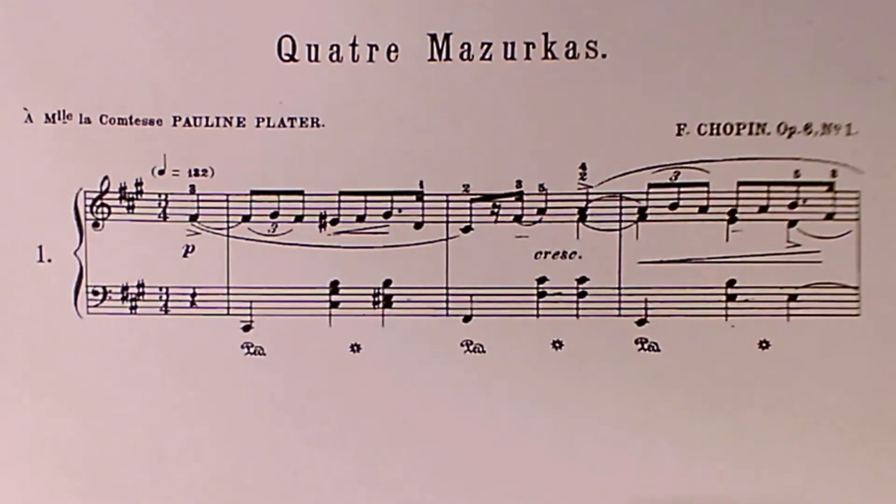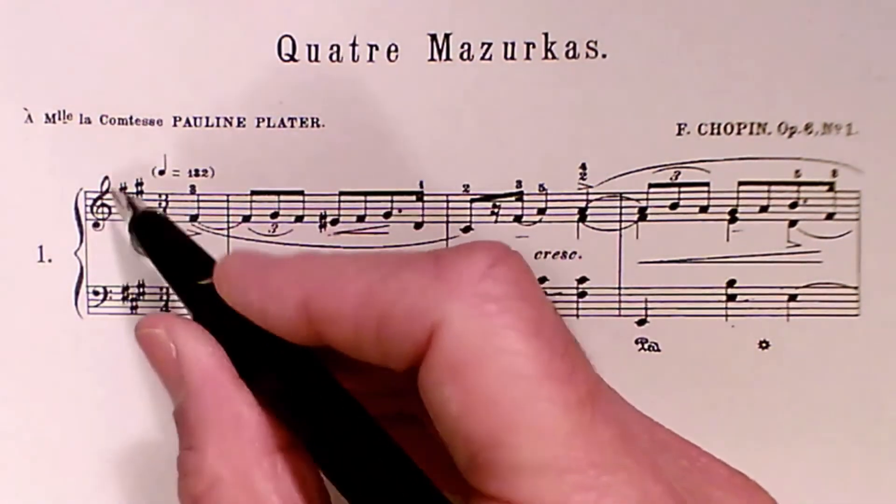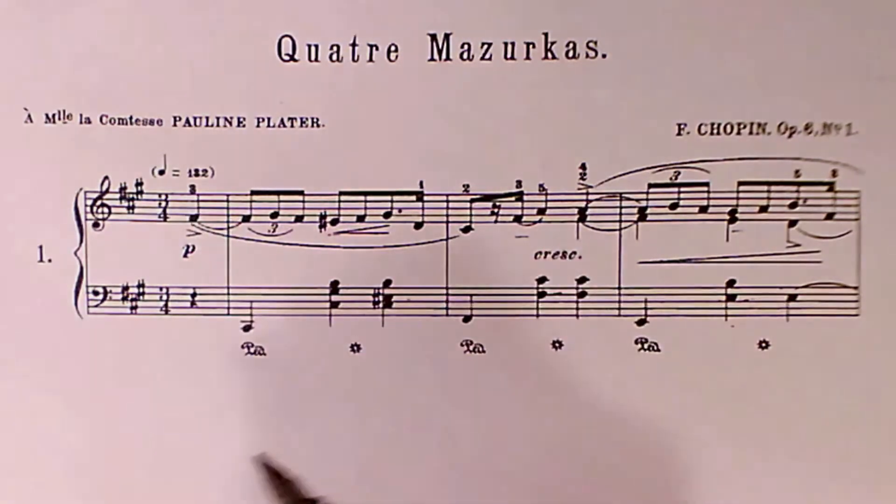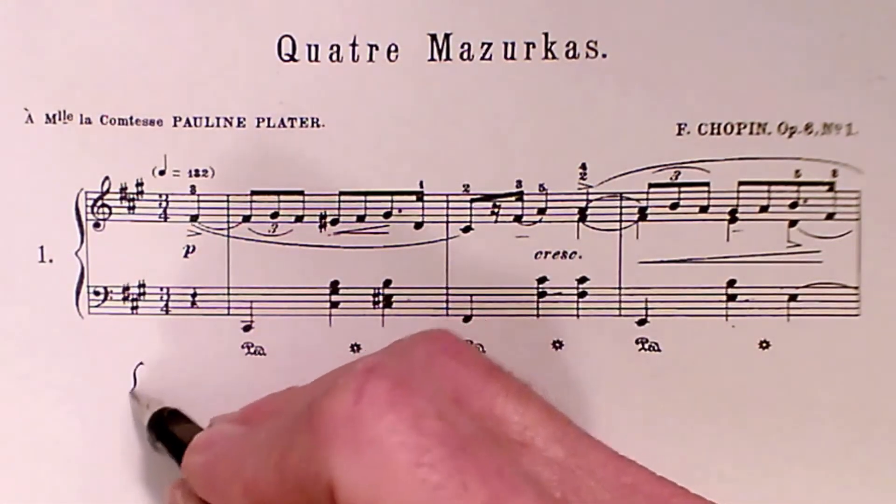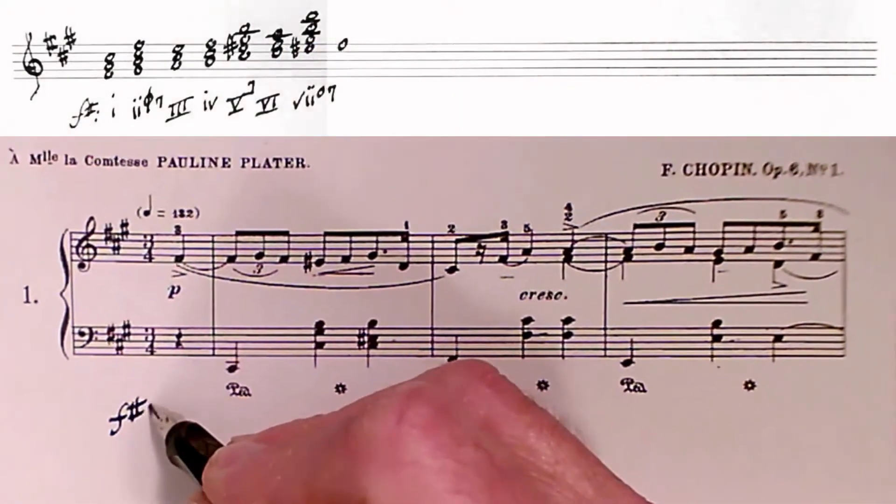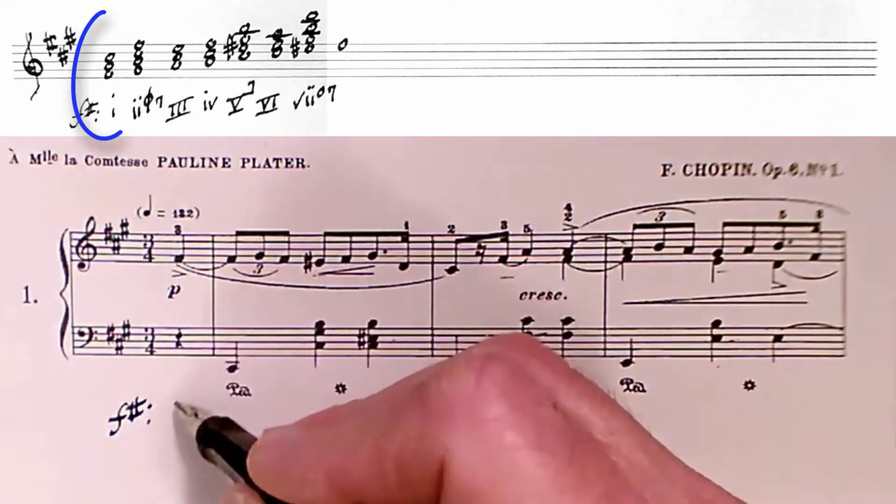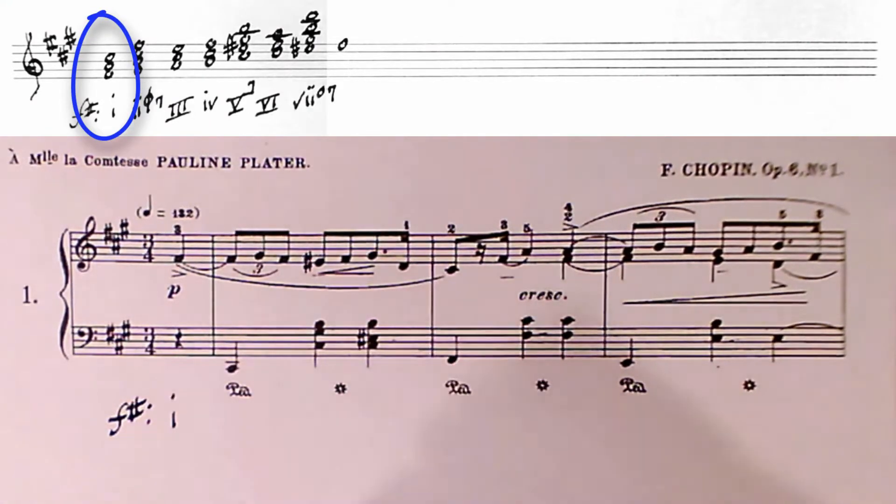All right, we're going to go ahead and start our analysis. We see three sharps, and the first note as F-sharp. So that's good enough for us to say that's the key of F-sharp minor, and the first chord. Even though it's just one pitch, that'll have to be enough to call it a one chord.